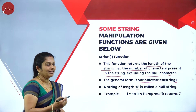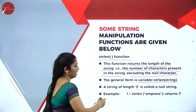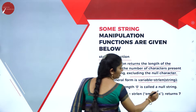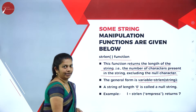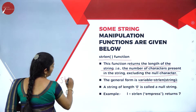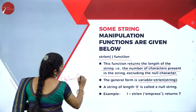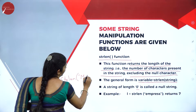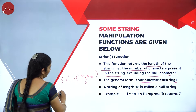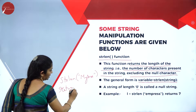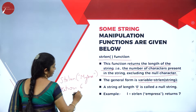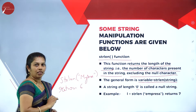For example, l = strlen('emprise') — it will return 7 because there are 7 characters. For example, strlen('Mysore') will return 6 because there are 6 characters. The result is returned in integer format.